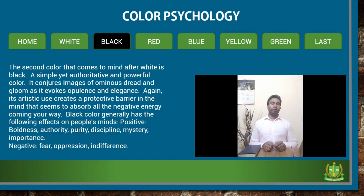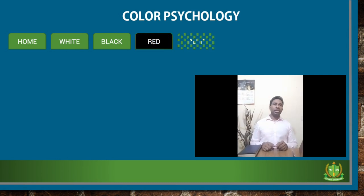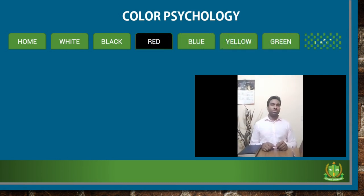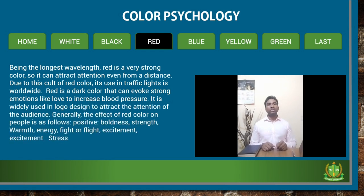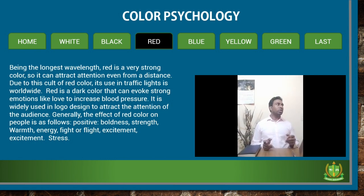My next color is red. Being the longest wavelength, red is a very strong color, so it can attract attention even from a distance. Due to this property, its use in traffic lights is worldwide. Red is a bold color that can evoke strong emotions like love and increased blood pressure. It is widely used in logo design to attract the attention of the audience.